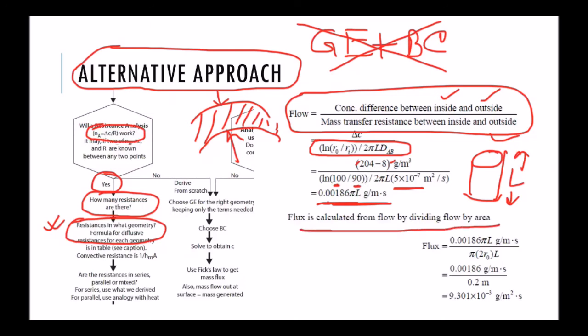Notice that this is flow and it has an L in it. L is the length of the branch or the tree and we do not know L, but we also don't need flow. What we need is flux. So flux is calculated from flow dividing by the area. So flow divided by this is my surface area, pi times d which is 2r0 times L. So when you divide that, then L goes away and we get the final answer.